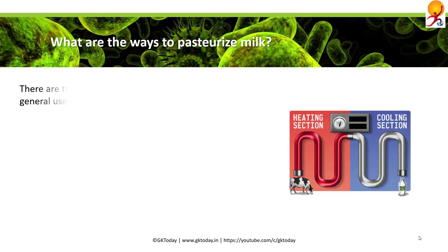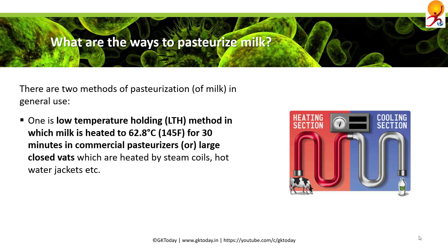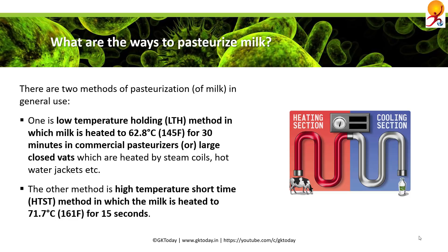There are usually two methods used to pasteurize milk. One is LTH, or Low Temperature Holding, and another is HTST, or High Temperature Short Time. In LTH, milk is heated to 62.8 degrees Celsius for 30 minutes in commercial pasteurizers or large closed vats heated by steam coils, hot water jackets, etc. In HTST, the milk is heated to 71.7 degrees Celsius for 15 seconds only.